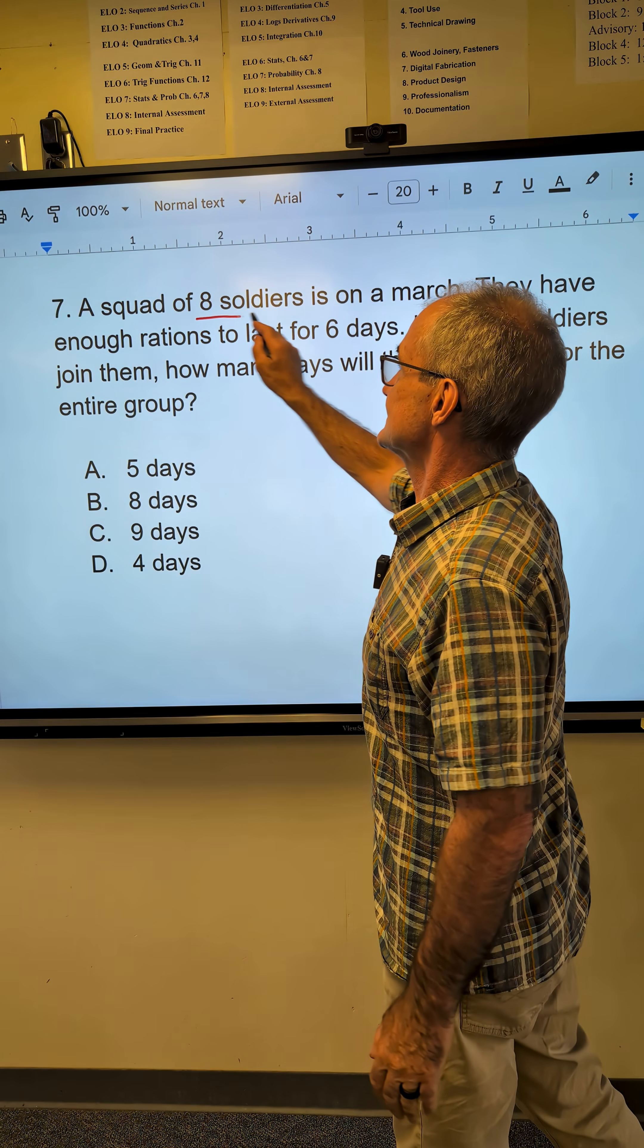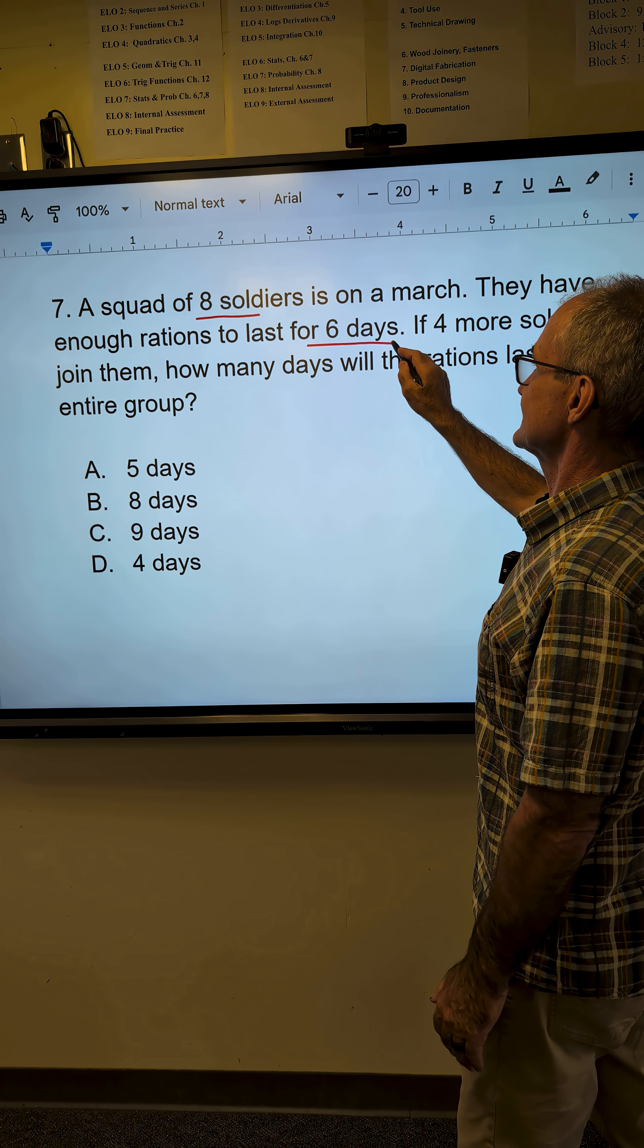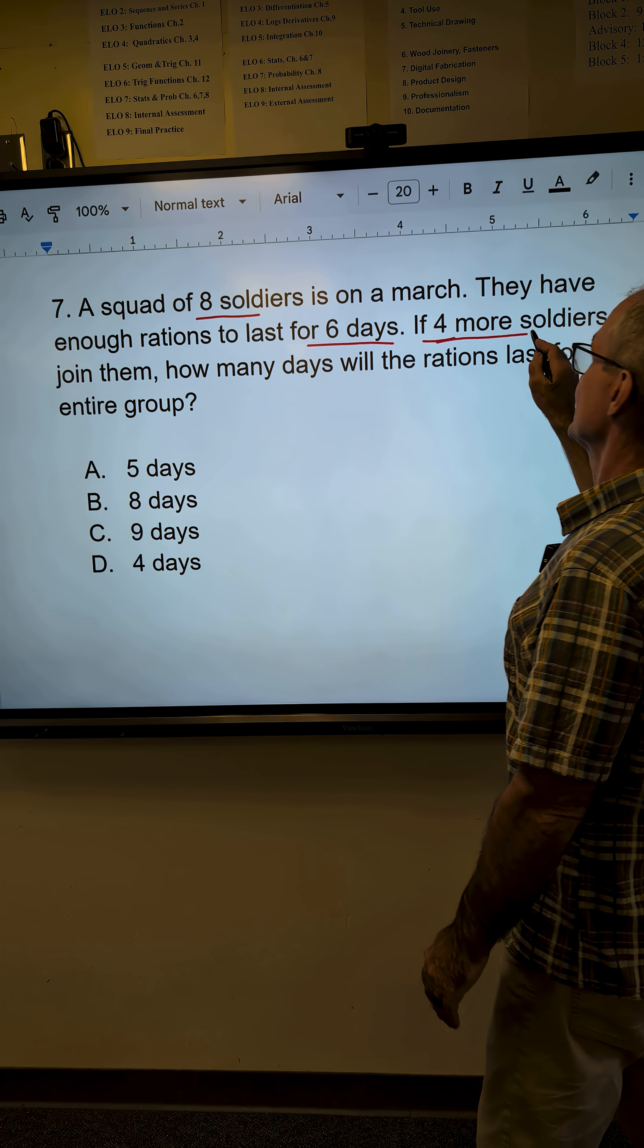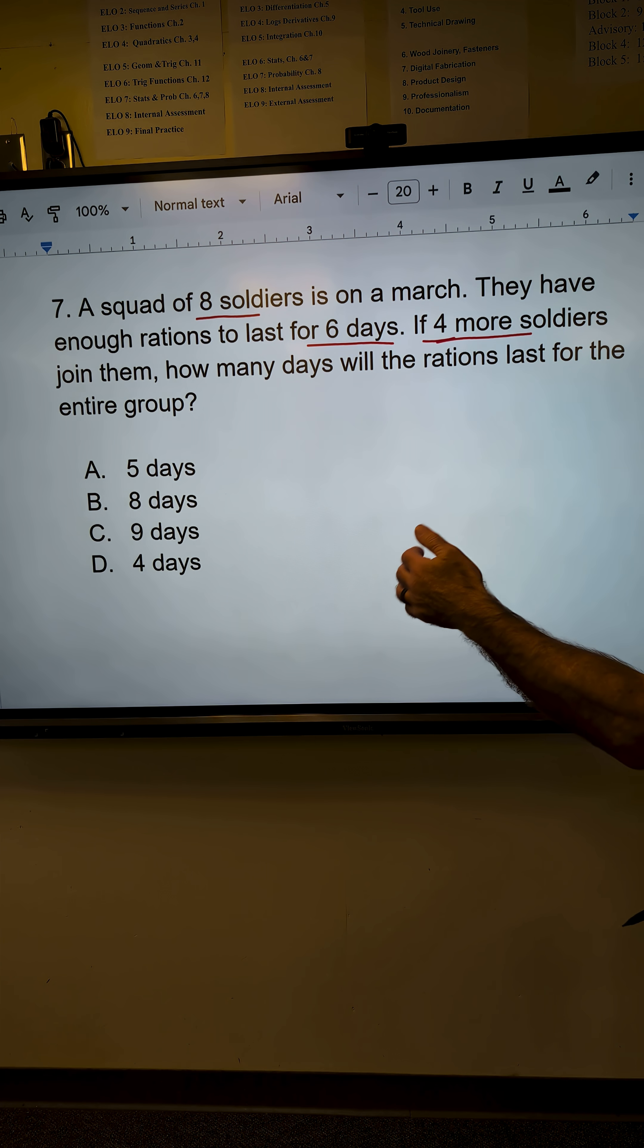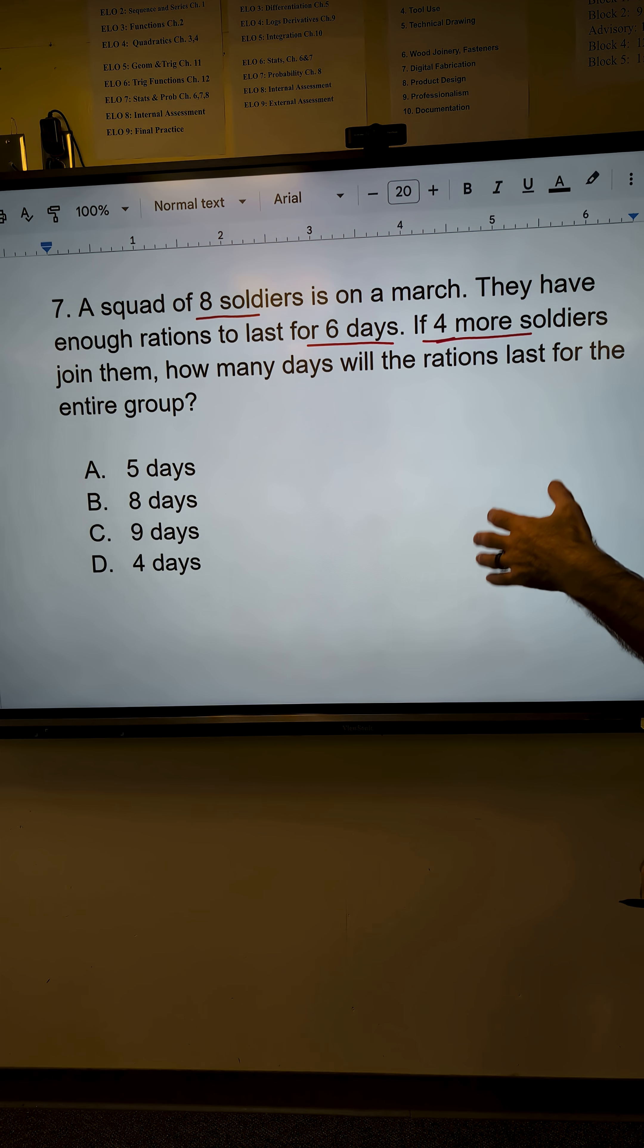I have a squad of eight soldiers on a march. They have enough food to last six days. Four more soldiers are added. That means it's an inverse relationship. So the amount of food has to go down.